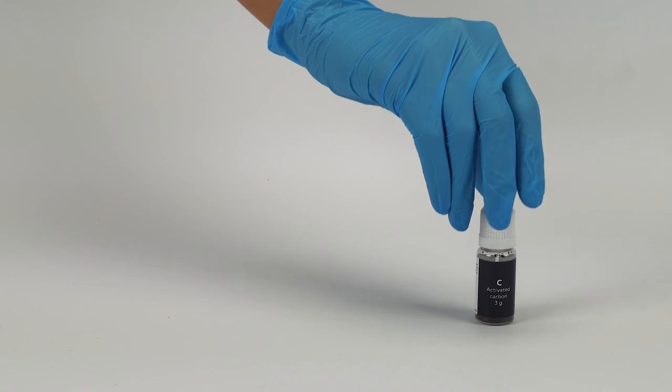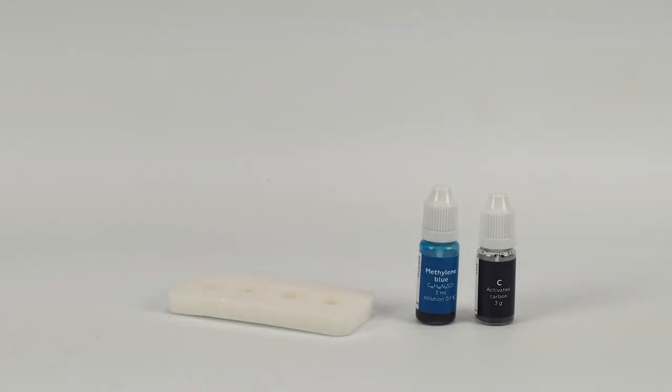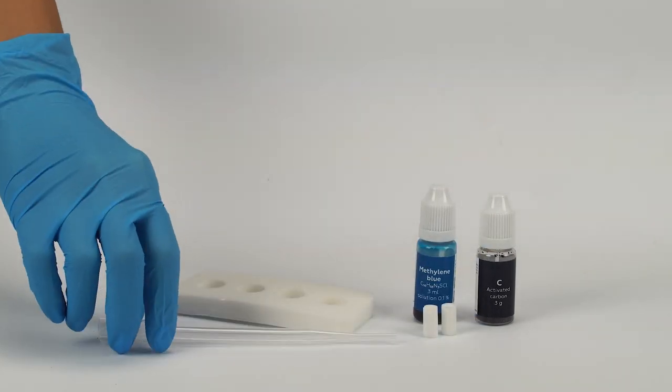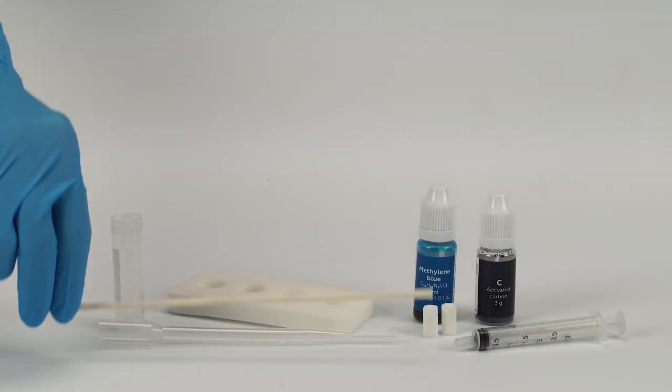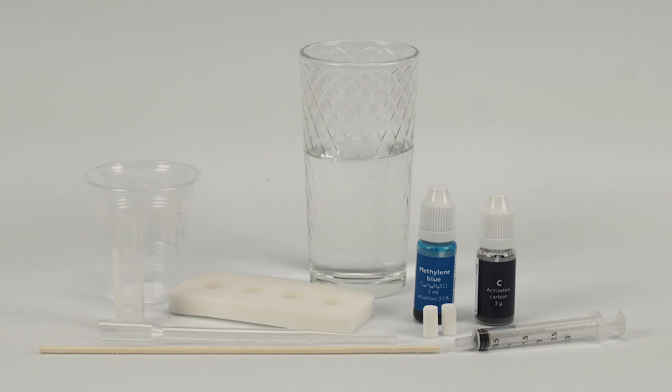For the carbon filter experiment, you will need a bottle of activated carbon and methylene blue solution. Take the vial stand, two small cotton cylinders, a filter body, a plastic vial, a syringe, and a wooden stick from the experiment set. Take a plastic cup from the starter kit. Also, prepare some water in advance.